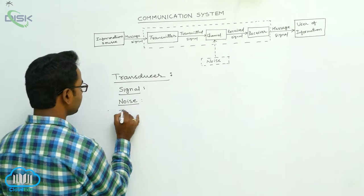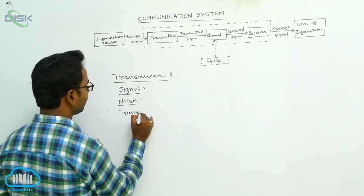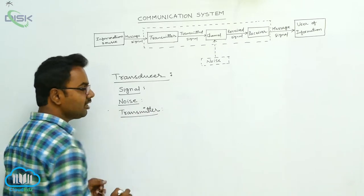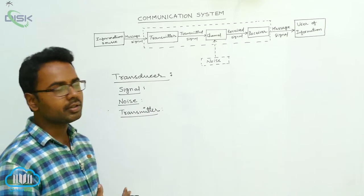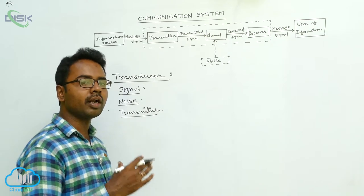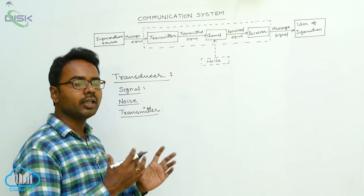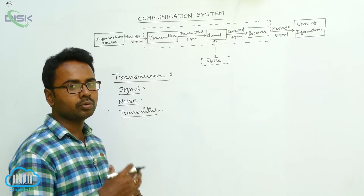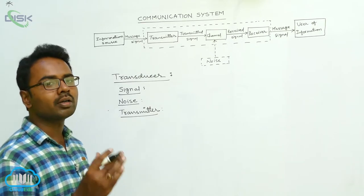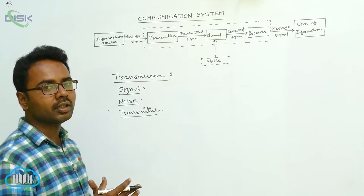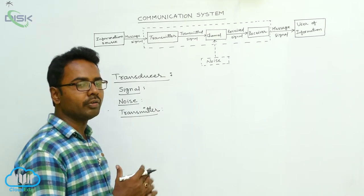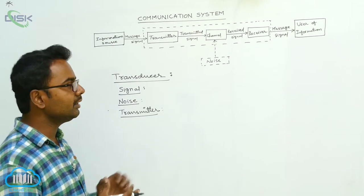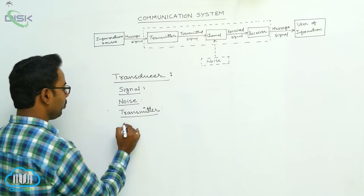A transmitter is a device which converts an information signal into a suitable form for transmission. Directly, the information cannot be transmitted over long distances. To transmit information over long distances, we need a transmitter, which converts the message signals into a suitable form for transmission.